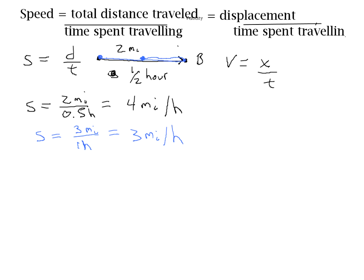Before, we had a two-mile trip from point A to point B and it took us half an hour. Displacement is simply the straight-line distance between your starting point and your ending point. The straight-line distance between point A and point B is two miles, and the time was half an hour. So our average velocity for that first trip was two miles over 0.5 hours, or four miles per hour. That trip had the same average speed and average velocity.